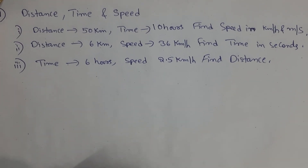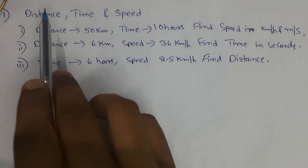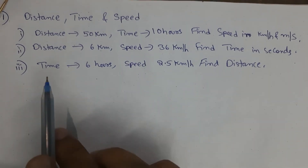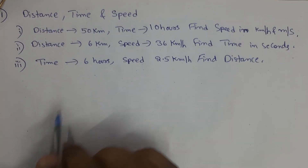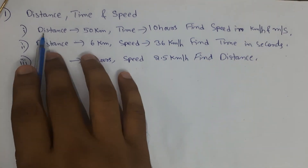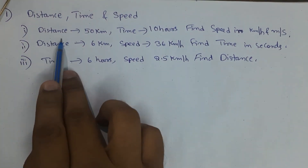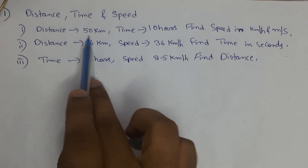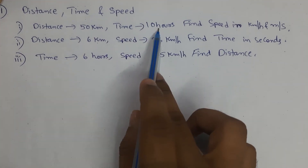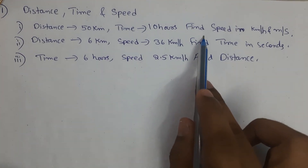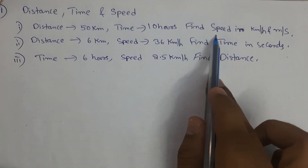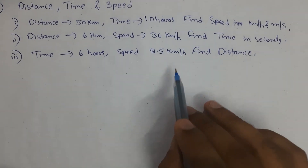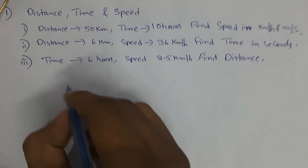In previous classes we learned about distance, time, and speed. Let's see some numericals on these topics. The first problem: distance is given as 50 kilometers, time is given in hours, and we are asked to find speed in kilometers per hour and meters per second.